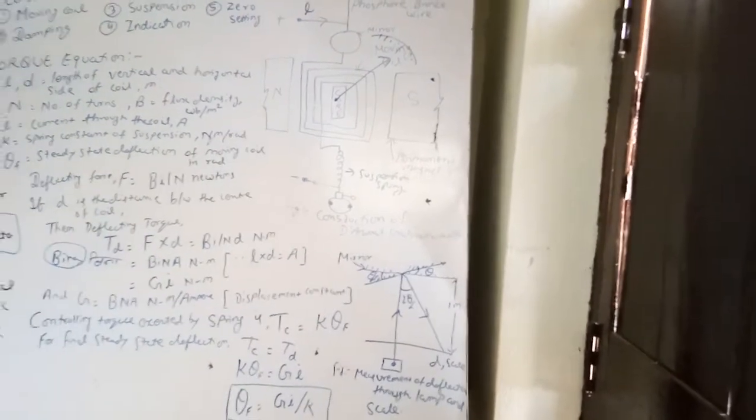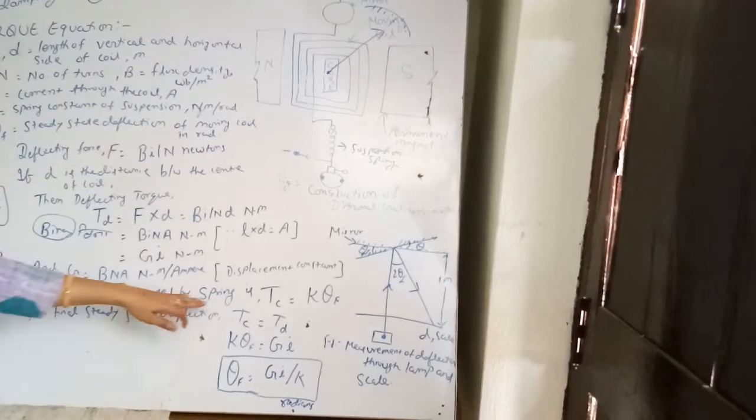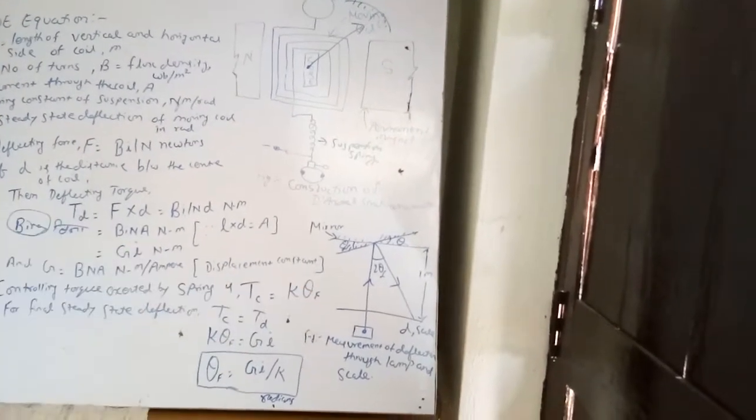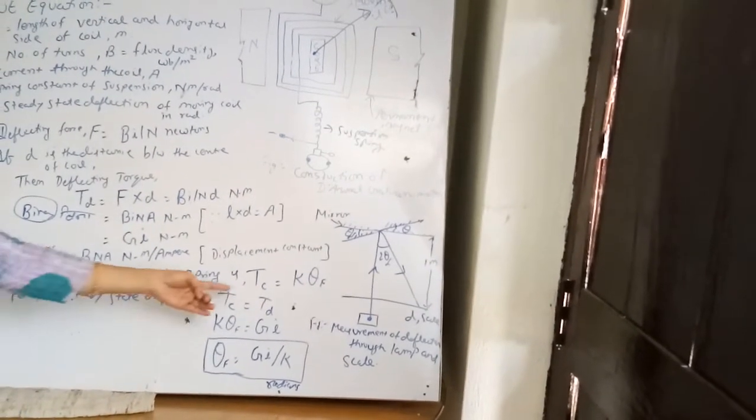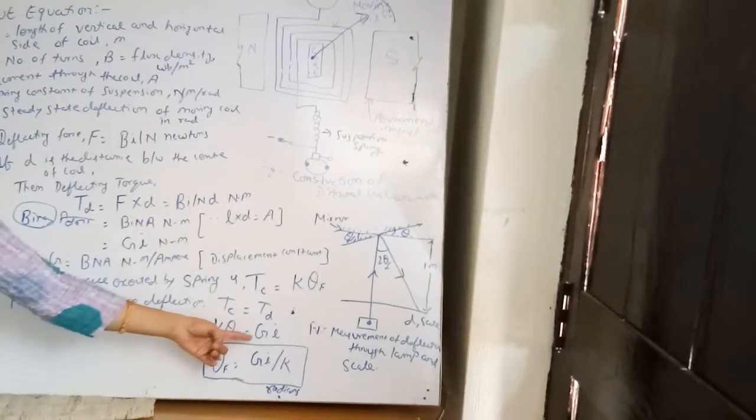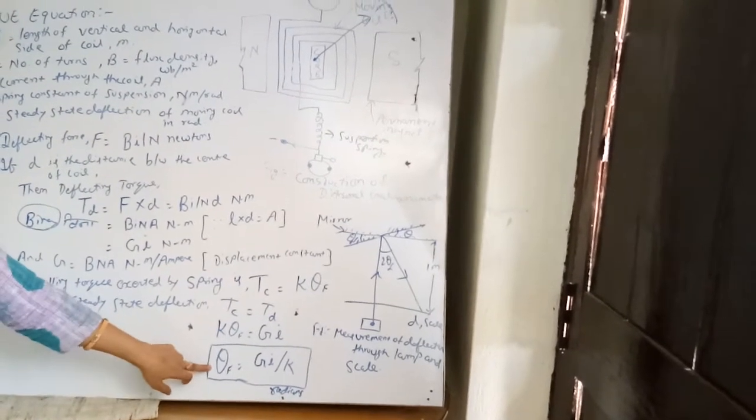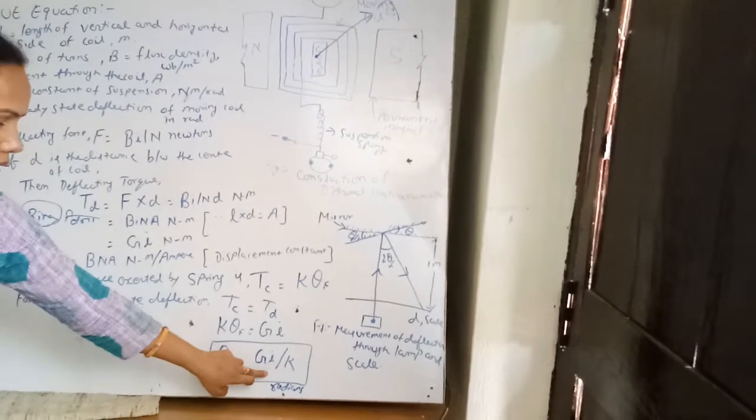The suspension spring is provided to give controlling torque. This controlling torque should be equal to the deflecting torque for steady state deflection. The controlling torque Tc = K·theta. So Tc = Td gives K·theta = G·I, and therefore theta = G·I / K, which is your final steady state deflection with respect to current.